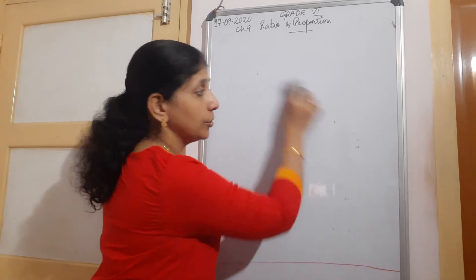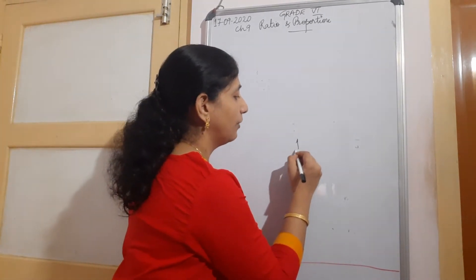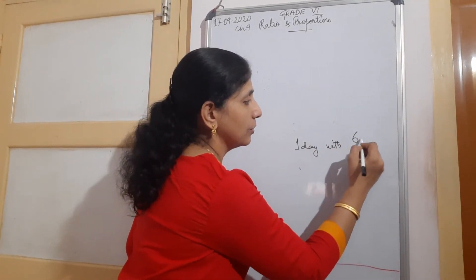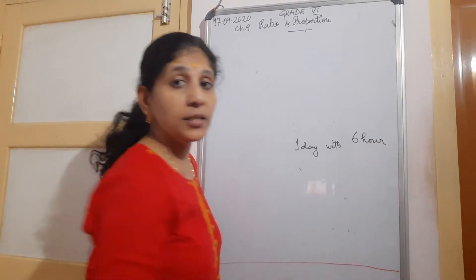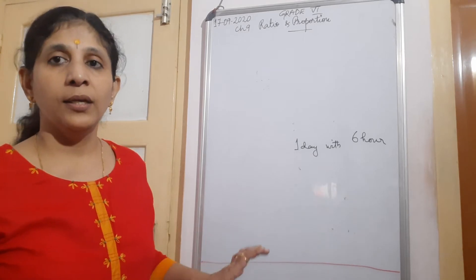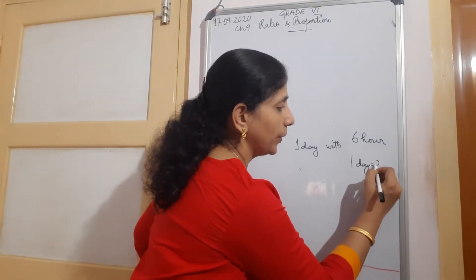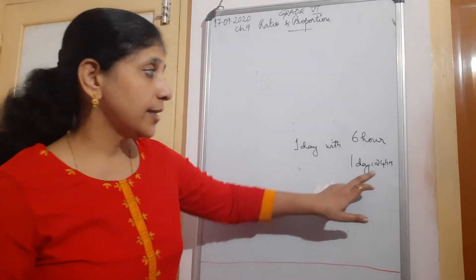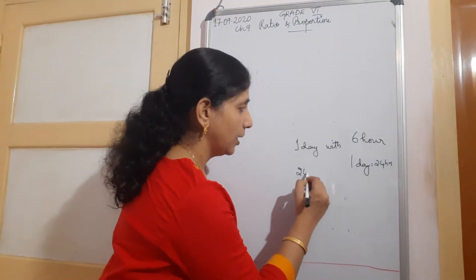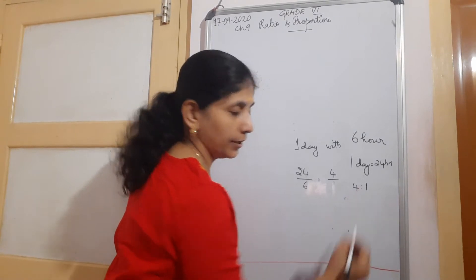For comparison you must have the same unit. Suppose how will you compare 1 day with 6 hours? If I ask you to find the ratio between 1 day and 6 hours, first convert: 1 day equals 24 hours. Now both quantities have the same unit. So it is 24 upon 6, that is 4 upon 1, so 4 ratio 1.